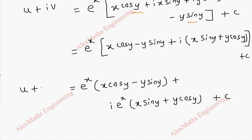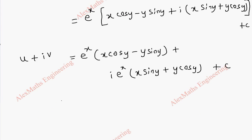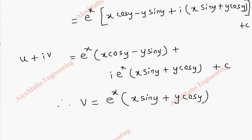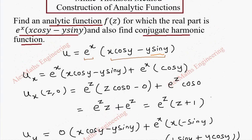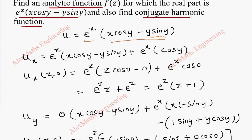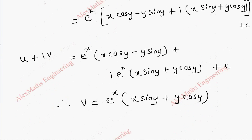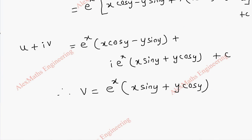By comparing the imaginary terms, we get v = e^x·(x·sin(y) + y·cos(y)). So as per the question, first we got f(z) = z·e^z + c as the analytic function, and we got the conjugate harmonic function which is the imaginary part v = e^x·(x·sin(y) + y·cos(y)).